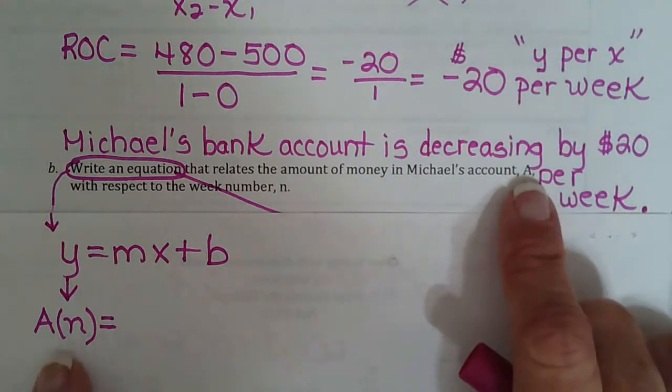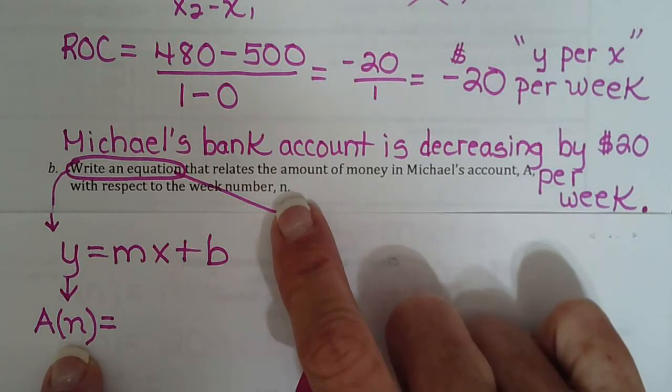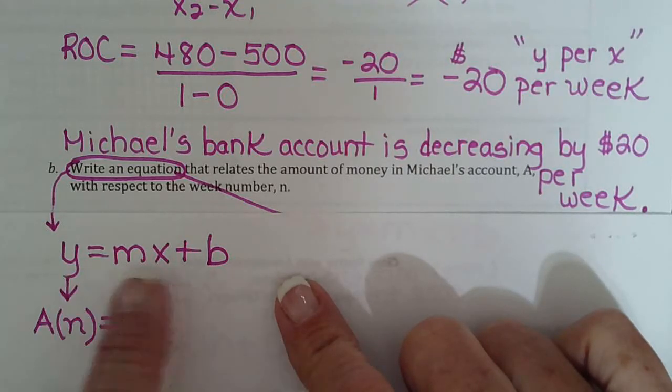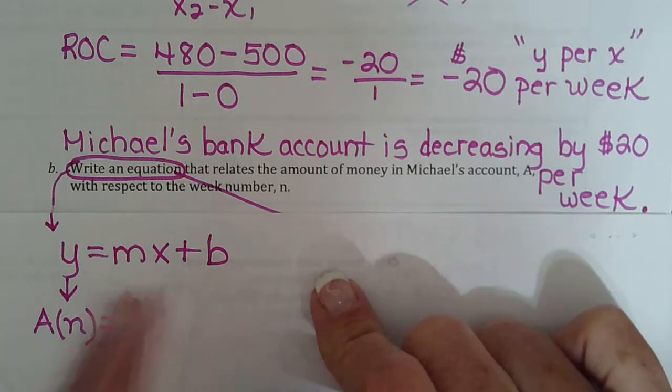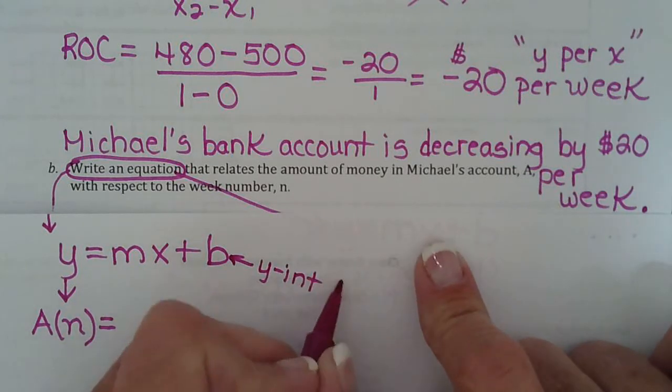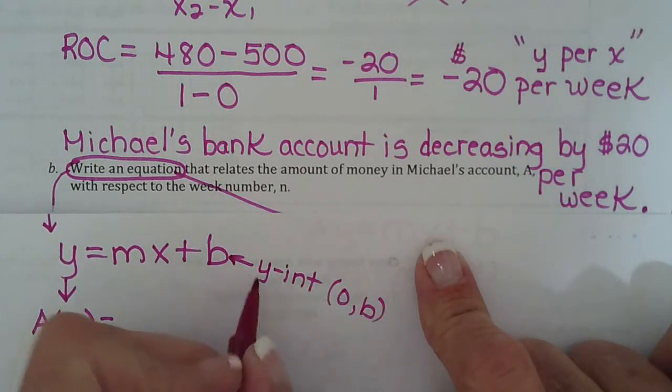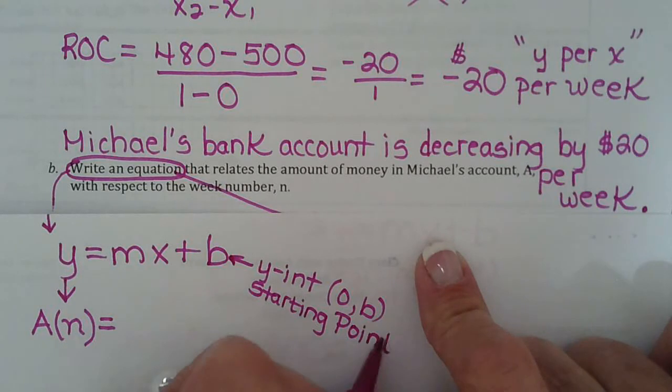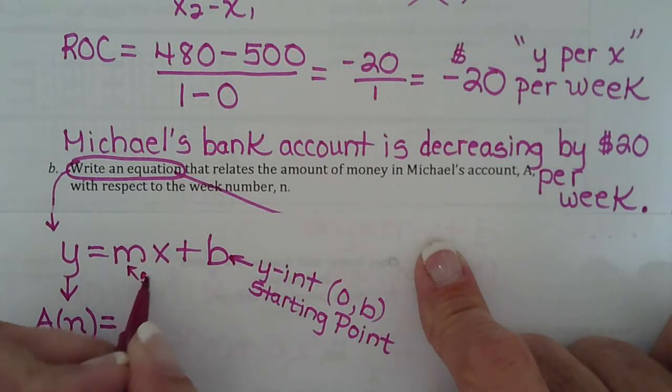So this is our y and remember our x always goes in parentheses. So then we look and say okay m is slope and we learned this on lesson one. We also learned it in module 6. So y equals mx plus b, m is the slope and b is the y-intercept. Just little reminders, y-intercept is (0,b) and remember the y-intercept is the starting point. And then m we can mark as the slope or rate of change.